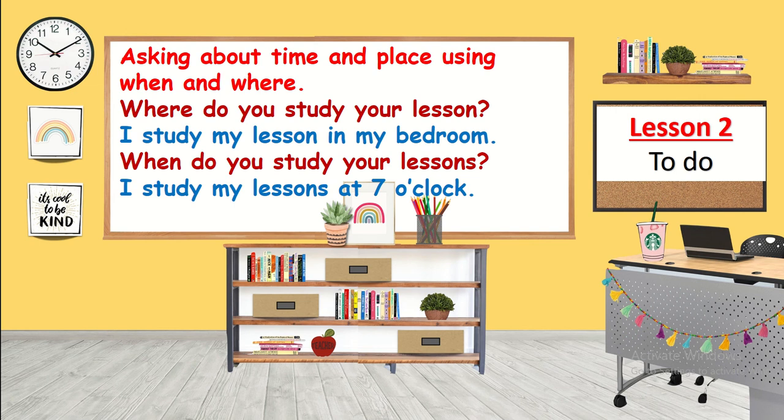To ask about place and time, we use 'where' and 'when'. For example: Where do you study your lesson? I study my lesson in my bedroom. When do you study your lesson? I study my lessons at seven o'clock. Thank you, and I hope you understand our lesson today. Goodbye!